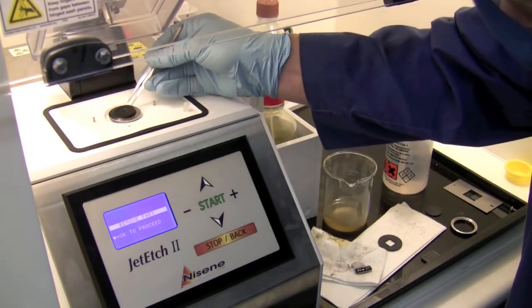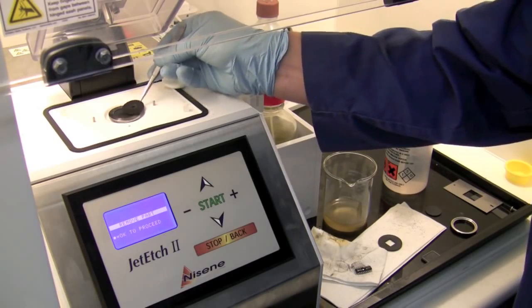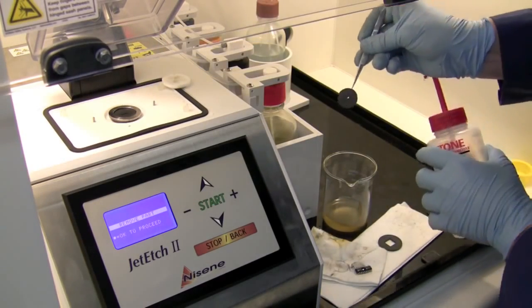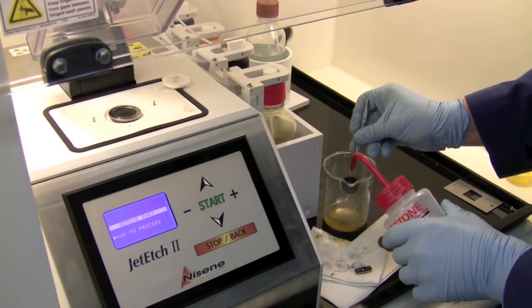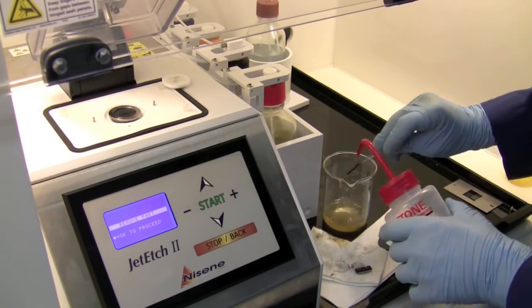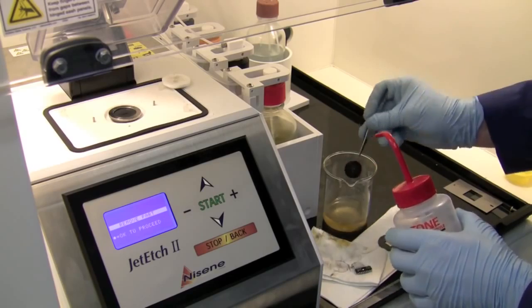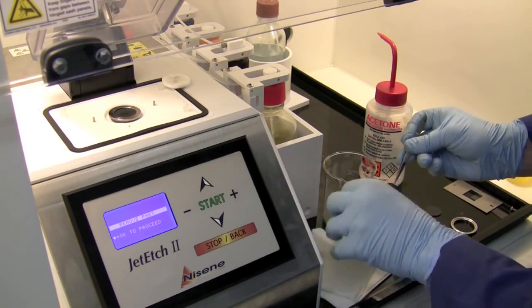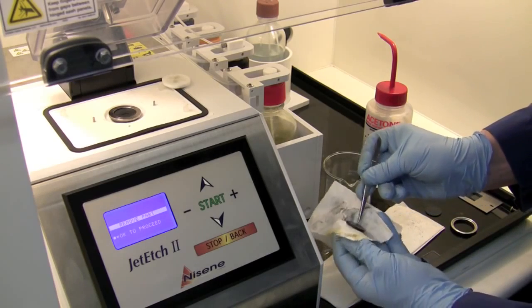Now we're going to grab our gasket. When using acetone and these gaskets, you really want to make sure you're not leaving it in the acetone too long, or else they'll swell up and they're not going to make good seals for you later. So I'm just going to give it a quick spritz, take it to my paper towel and dry it off.